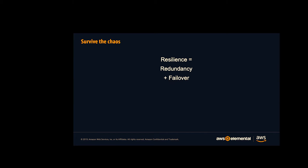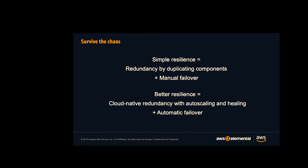The core message is that your resilience is basically built out of having redundancy and then failover between that redundancy. The simple form is just to have a duplicate of what you're building and switch manually between A and B. But what the cloud can enable is a better form of resilience — a cloud-native architecture that utilizes auto-scaling, the healing that's possible with auto-scaling groups, and trying to get as much of that failure to be automatic as well.